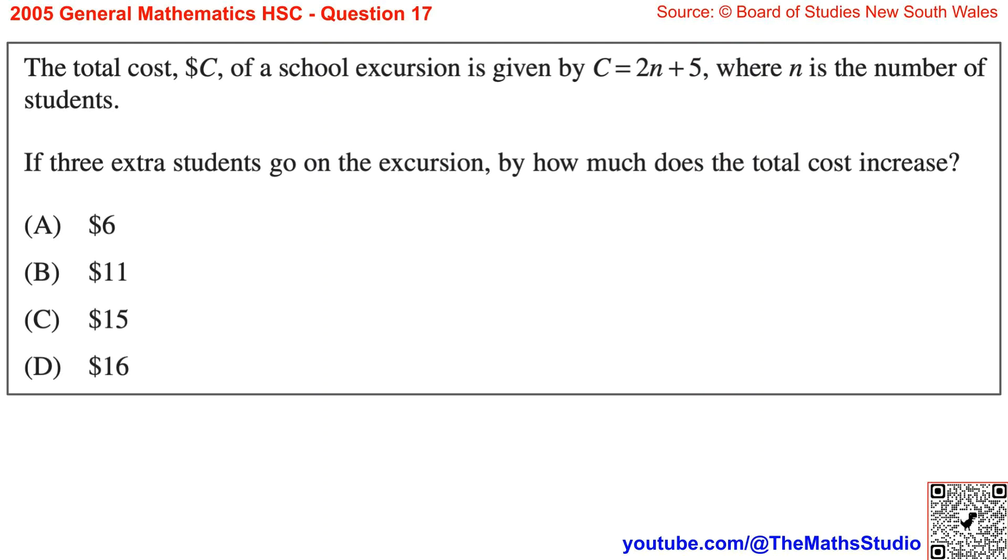Question 17. The total cost, c dollars, of a school excursion is given by c equals 2n plus 5, where n is the number of students.